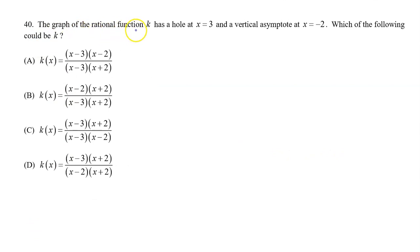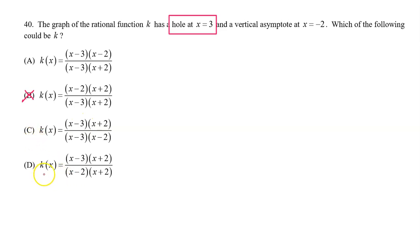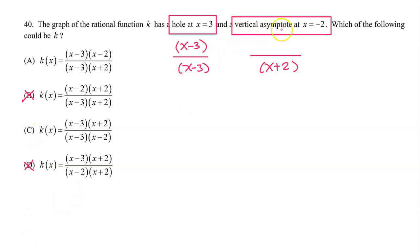Number 40. The graph of the rational function k has a hole at x equals 3 and a vertical asymptote at x equals negative 2. Which of the following could be k? A hole at x equals 3 means a factor of x minus 3 in the denominator that is cancelled out by a factor in the numerator. So A is possible. In B, the x minus 3 is not cancelled out, so the answer cannot be B. In C, the x minus 3 is cancelled out, so C is possible. D does not have an x minus 3 in the denominator at all, so D cannot be the answer. A vertical asymptote at x equals negative 2 means there must be a factor of x plus 2 in the denominator that is not cancelled out. A has a factor of x plus 2 that is not cancelled out — so the answer might be A. C has no factor of x plus 2 in the denominator, so the answer is not C. The answer is A.